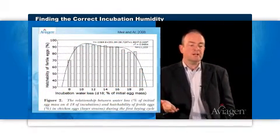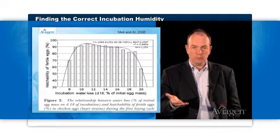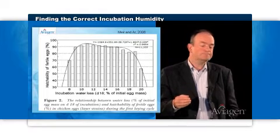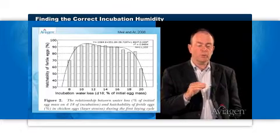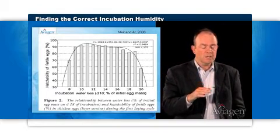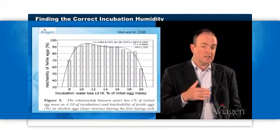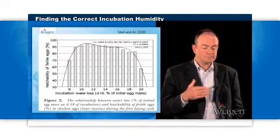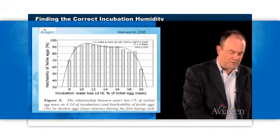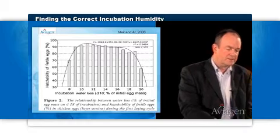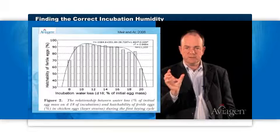This graph from an Israeli study shows the relationship between hatchability and egg water loss for individual eggs. You can see in this graph that there's a wide range of water losses where hatchability is about the same, but when you get to very high or very low water losses then the hatchability declines dramatically. We're normally managing whole batches of eggs, so what we're trying to do is get as many of our eggs as possible into this ideal zone for hatchability.